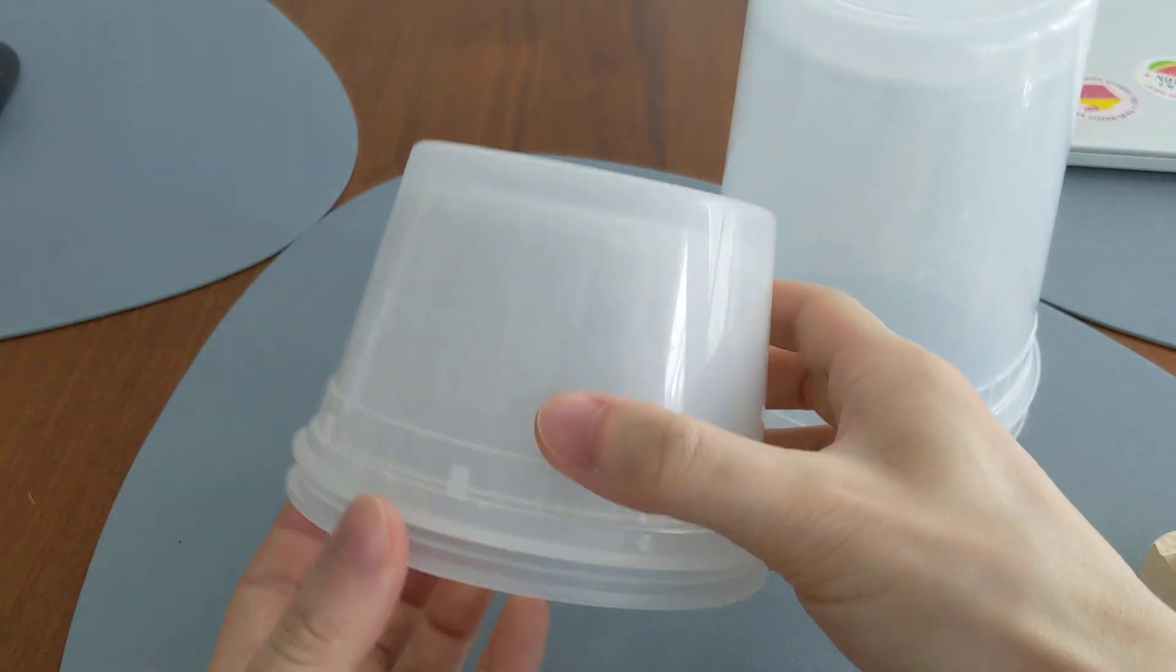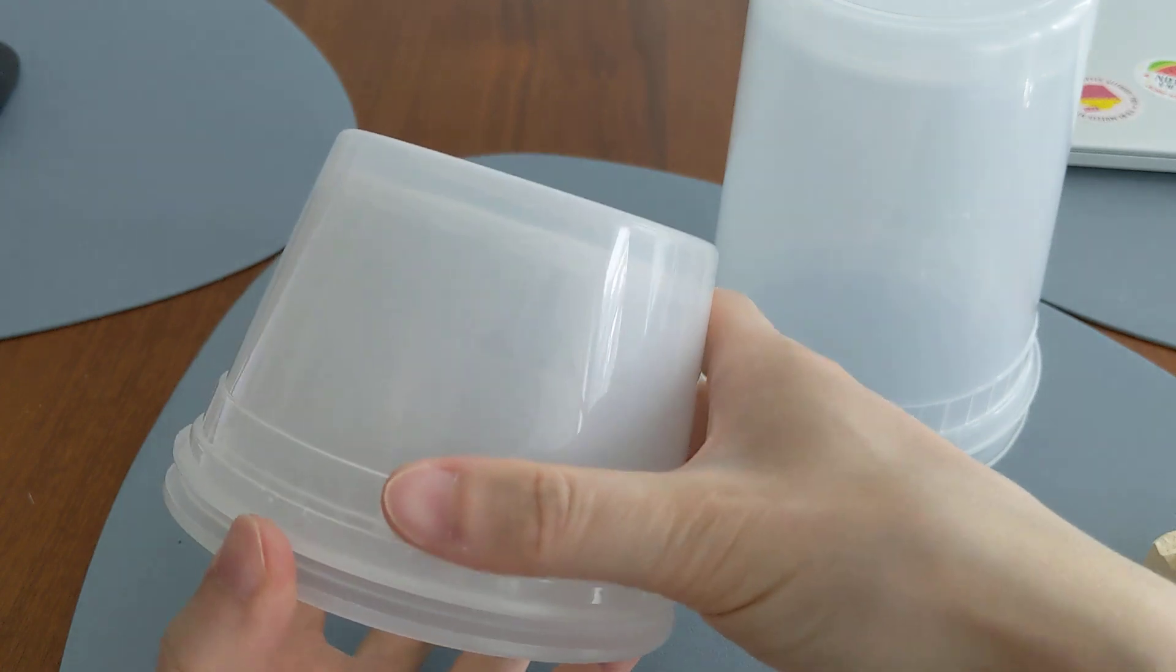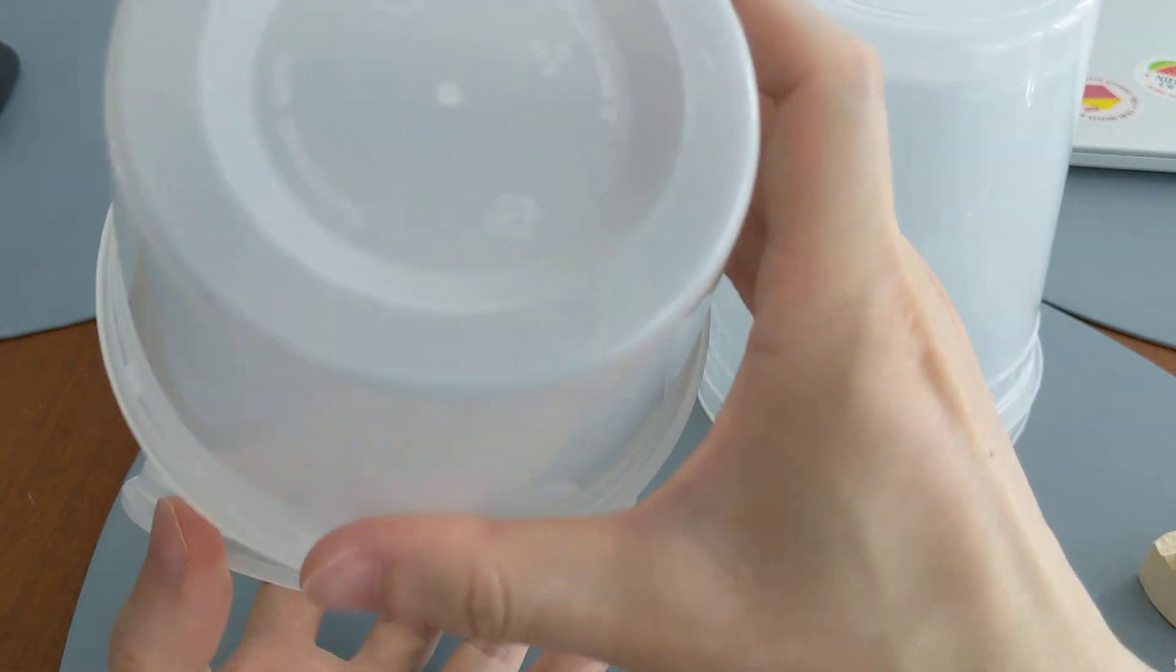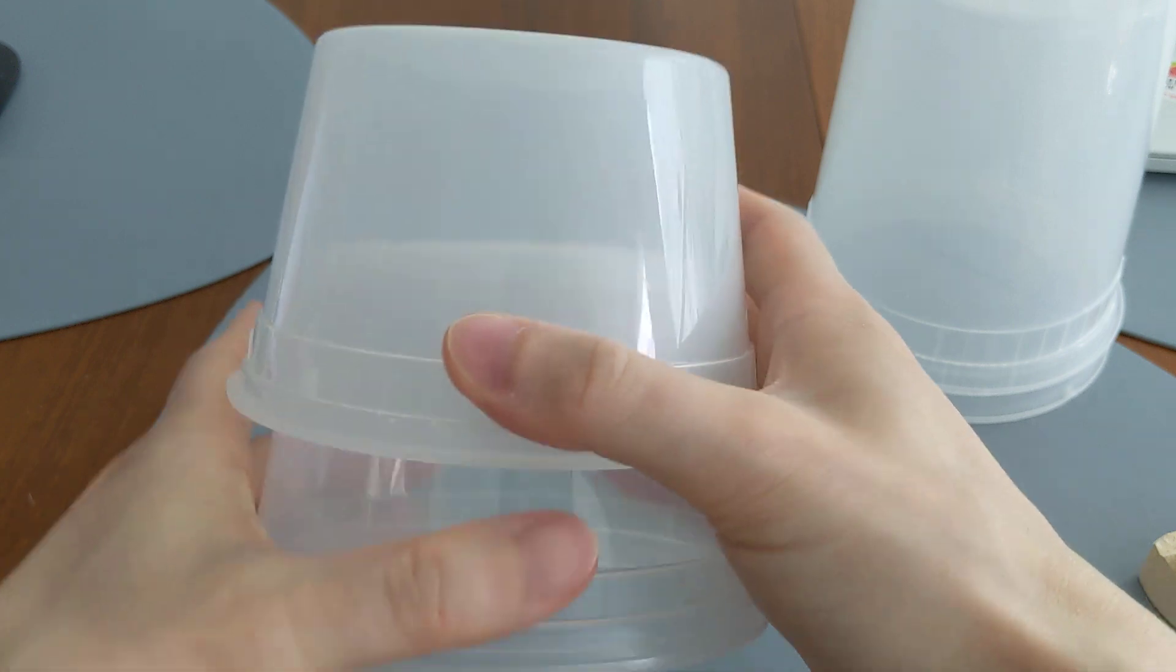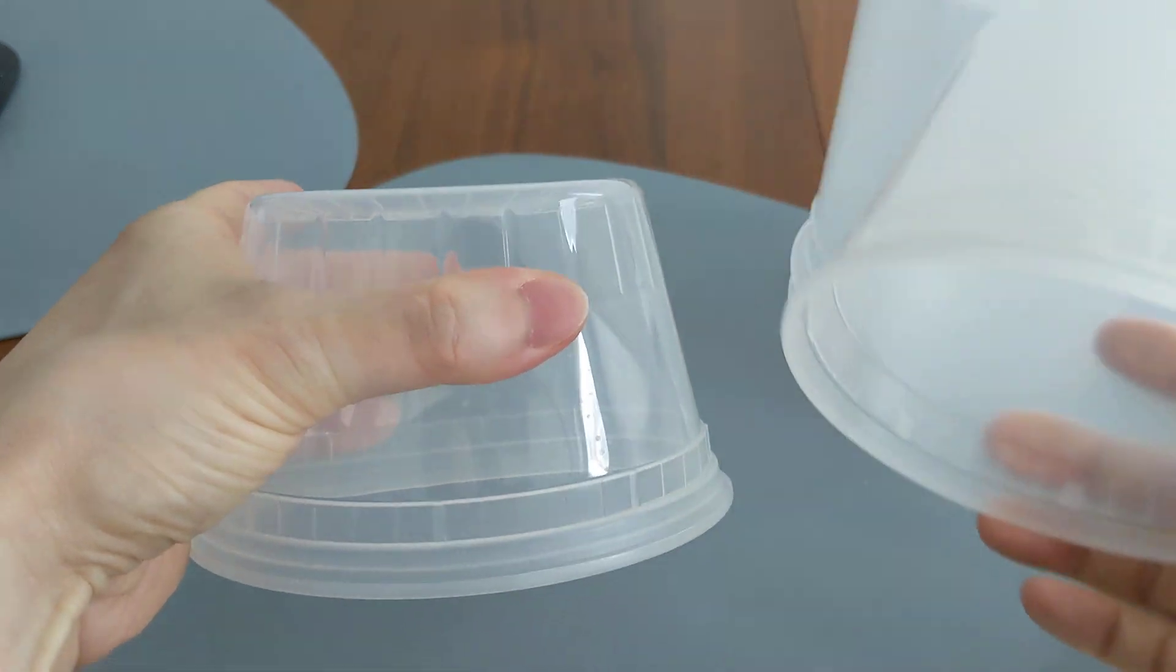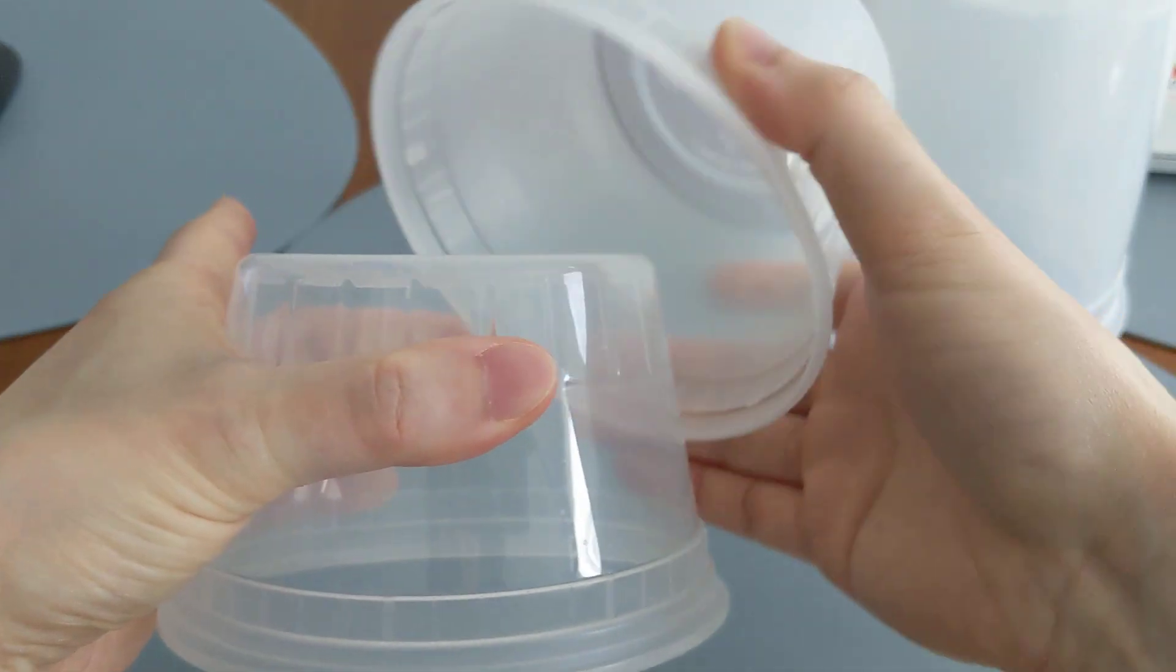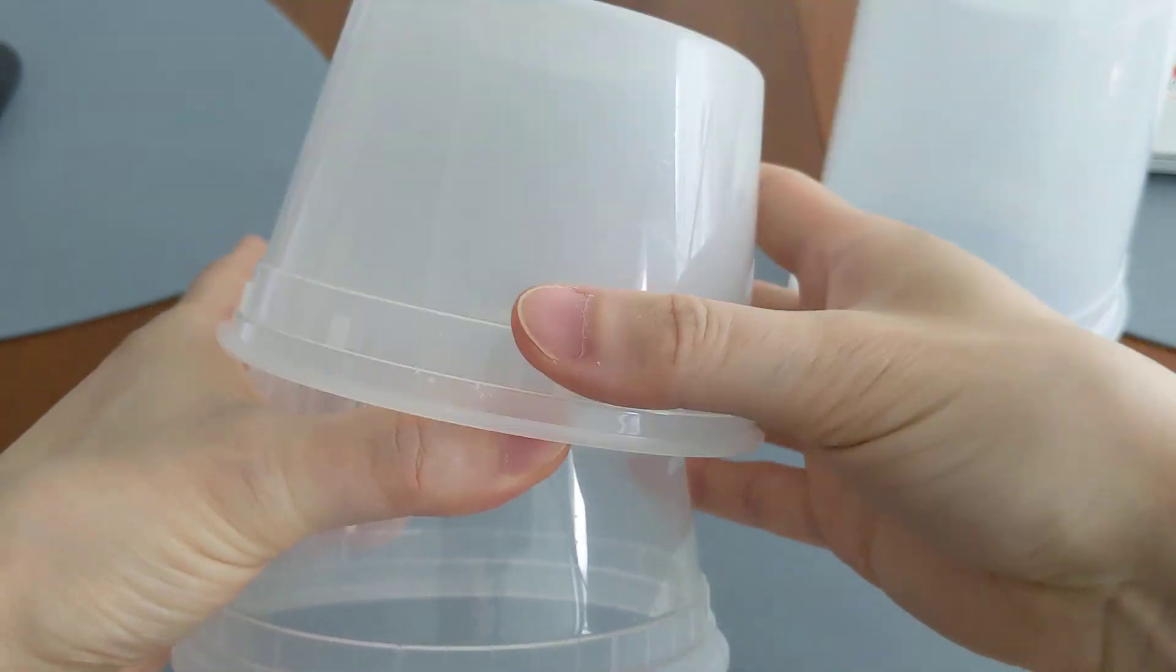But if you have a shorter one like this, it comes off significantly more easily. So as you can imagine, if your crown is really short, like if it only covers here, it would slide off very easily.